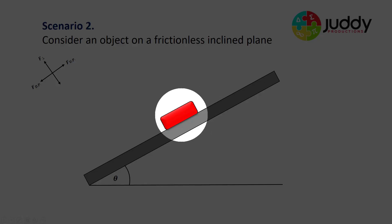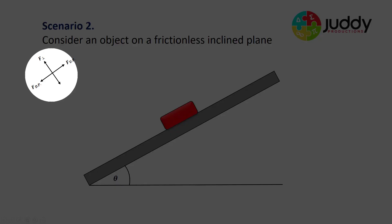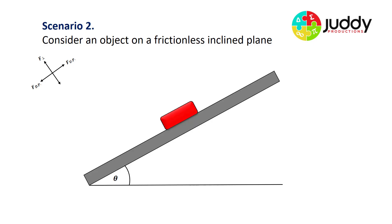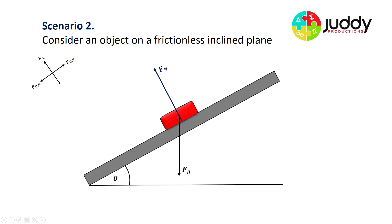We have an object sitting on an inclined plane at angle theta. Instead of considering forces up, down, left and right, we're now considering forces that are down the plane, up the plane, and perpendicular to the plane — this makes our mathematics a lot easier. We have a gravitational force operating straight down and a normal reaction force. The word 'normal' means 90 degrees, so the normal remains at 90 degrees to the surface. Unlike a flat surface, the normal reaction force and the gravitational force are no longer equal and opposite.